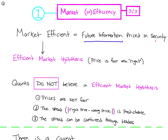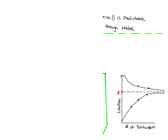The last section is market efficiency. A market is said to be efficient if future information is priced into a security perfectly - this only happens in an ideal world. This leads to the Efficient Market Hypothesis, which pushes the idea that the price is always fair. Quants do not believe in the Efficient Market Hypothesis for three main reasons: we believe prices are not fair; we believe the spread between the right price and the wrong price is predictable; and we believe that spread can be captured through trades.